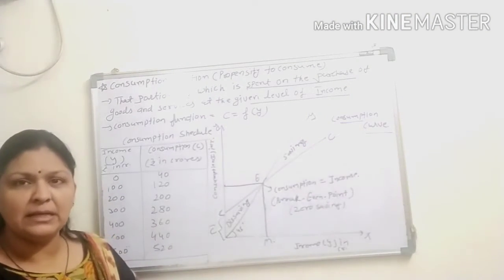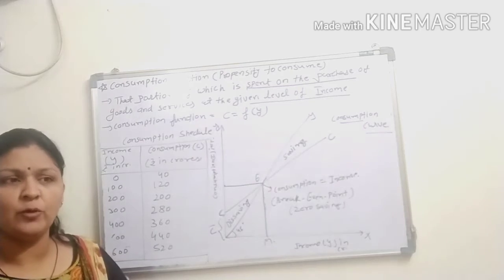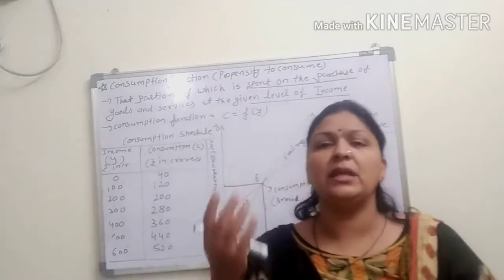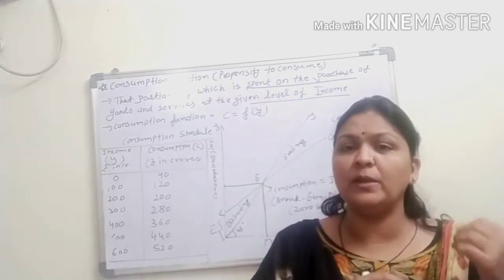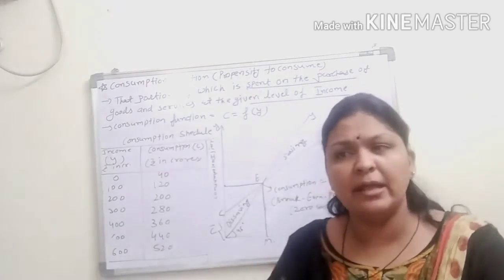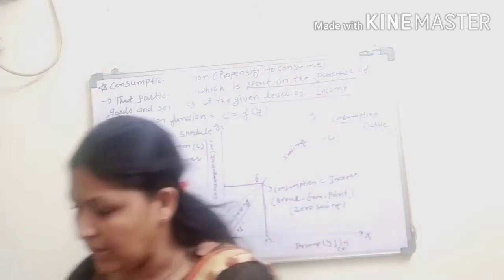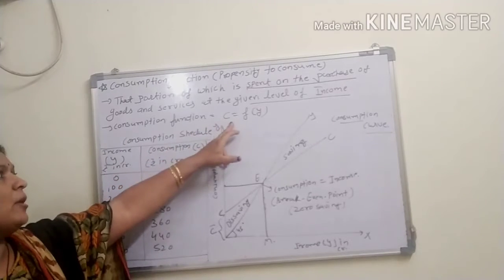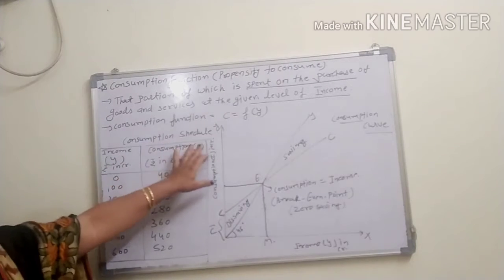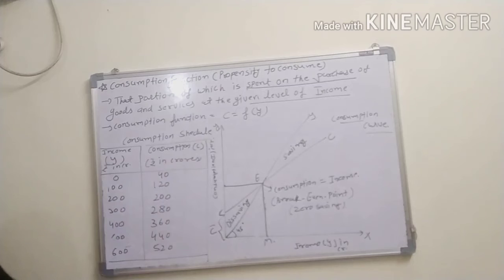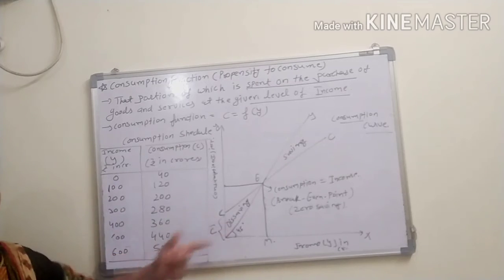We all know about the demand concept, already seen in 11th standard microeconomics. When the consumer demands something or consumes something, his habit and preference affect the demand. Now for reference, let us clarify what is C = f(Y). A consumption schedule is given — income in rupees crores and consumption C in rupees crores. When your income level is 0, first focus on the schedule.